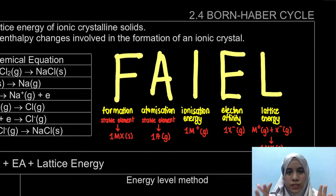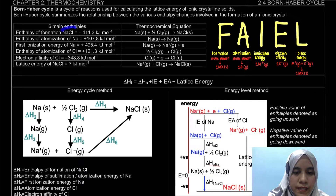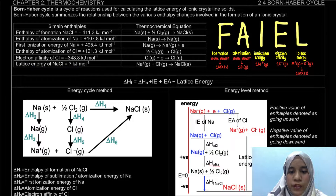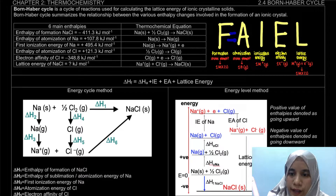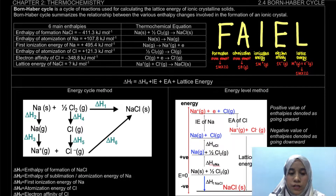We will combine these equations into one Born-Haber Cycle. There are two ways: the energy cycle method and the energy level method. Usually it is easier to use the energy cycle method, but I will also teach you the energy level method because some questions using the energy level method ask you what is the enthalpy between specific steps.